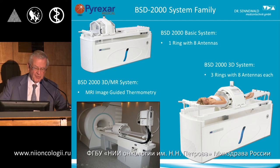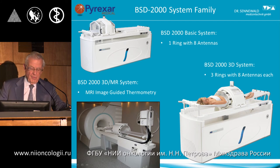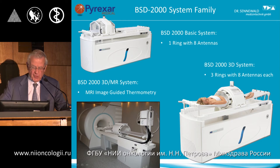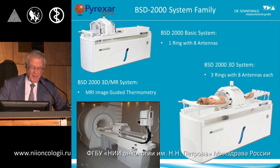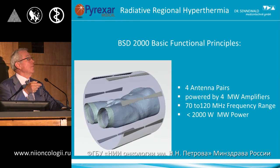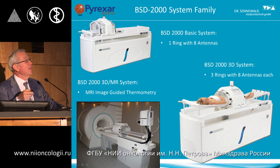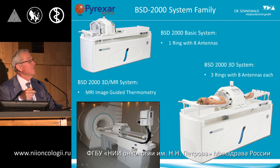This is the BSD 2000 system family. Superficially they look pretty much the same, and in handling that is true — they have similar handling. The basic applicator has eight antennas powered by four amplifiers.